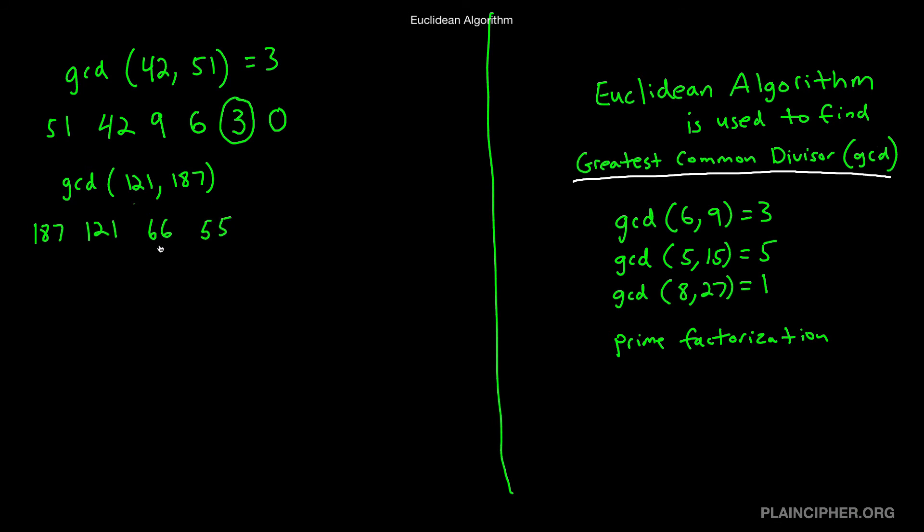What's 66 mod 55? It's 11. And what's 55 mod 11? It's 0. So when we hit 0, we're done, and the number right before 0 is our answer. So the answer is 11.